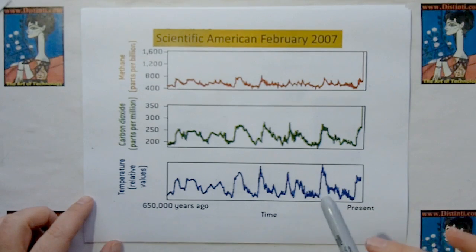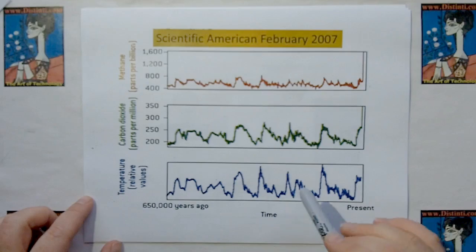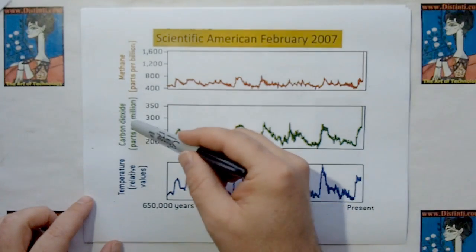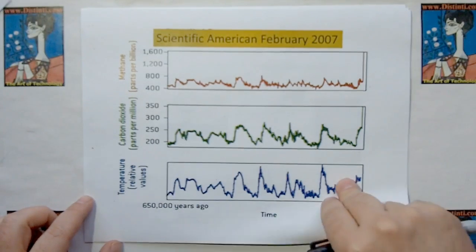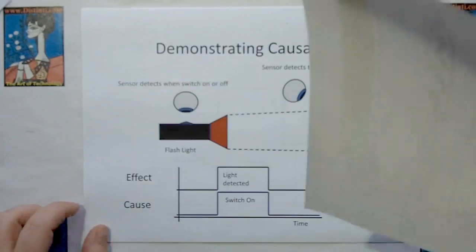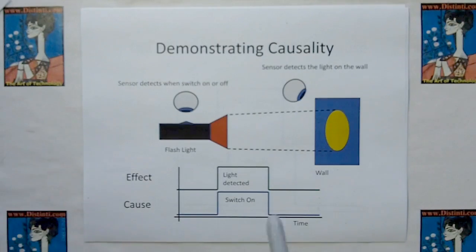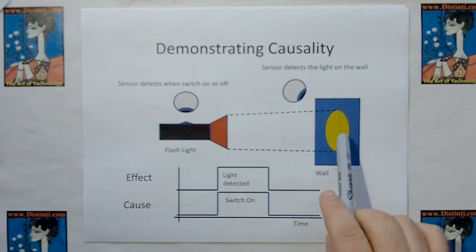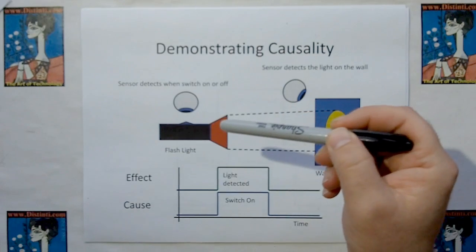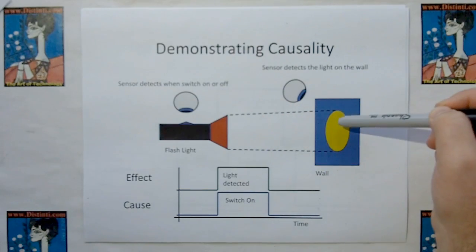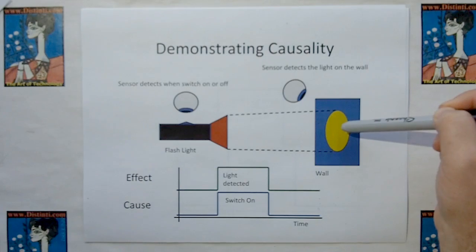I'm going to show you that this fails the causality rule if you say that carbon dioxide causes temperature. And what are the rules of causality? Well, suppose I had a flashlight pointed at a wall with a sensor that determined when the flashlight switch goes on and another sensor that detects when there's a spot of light on the wall.